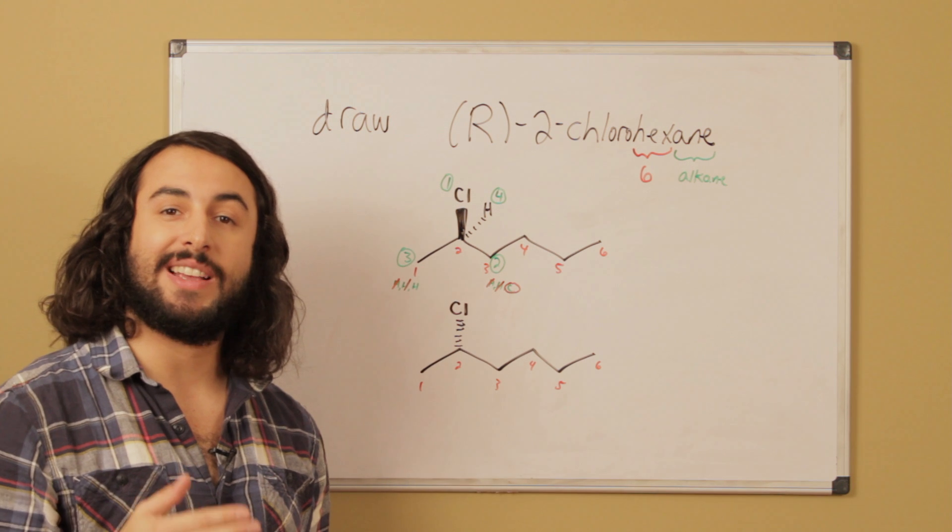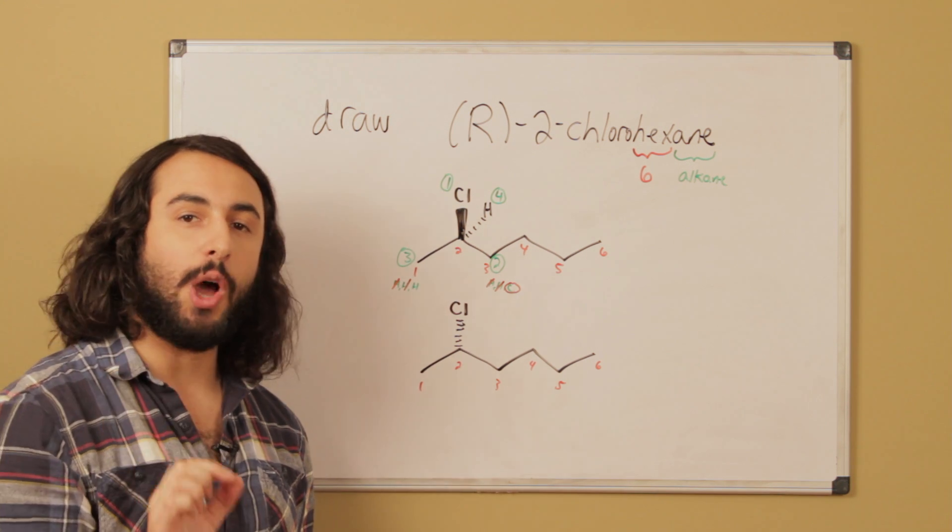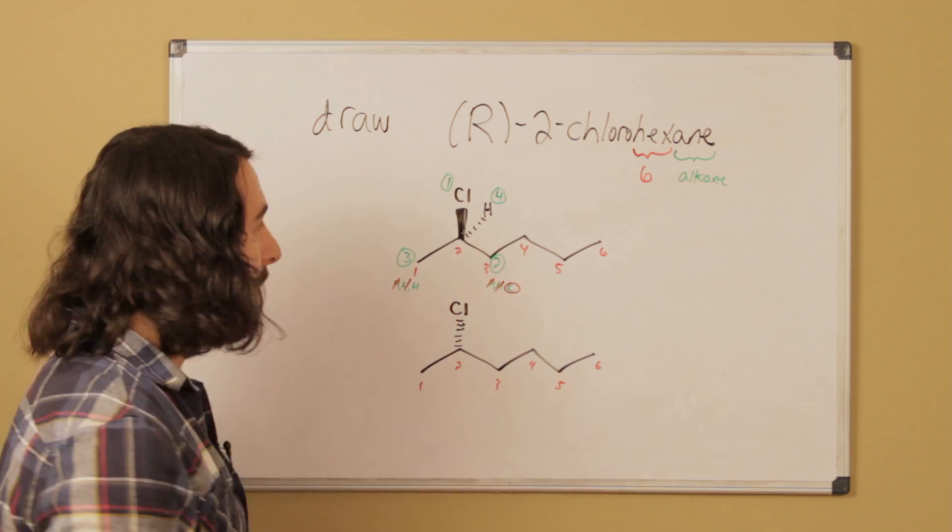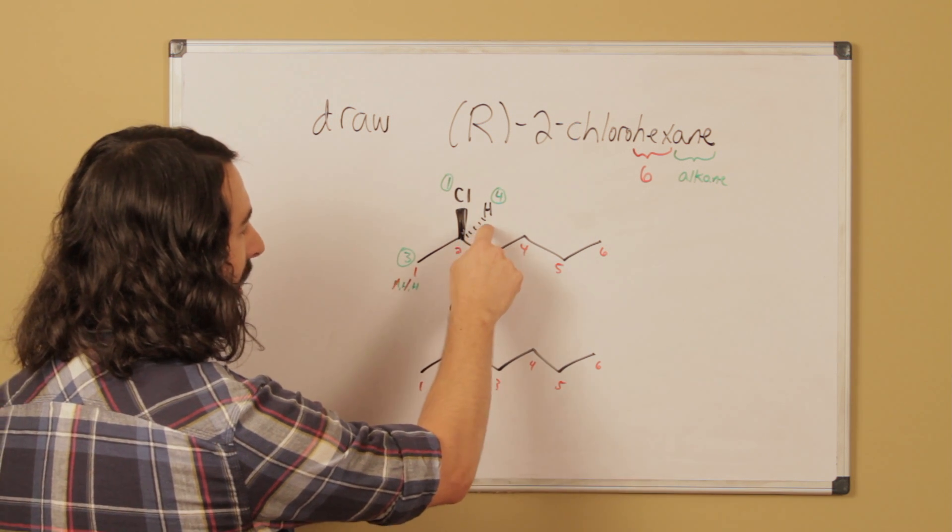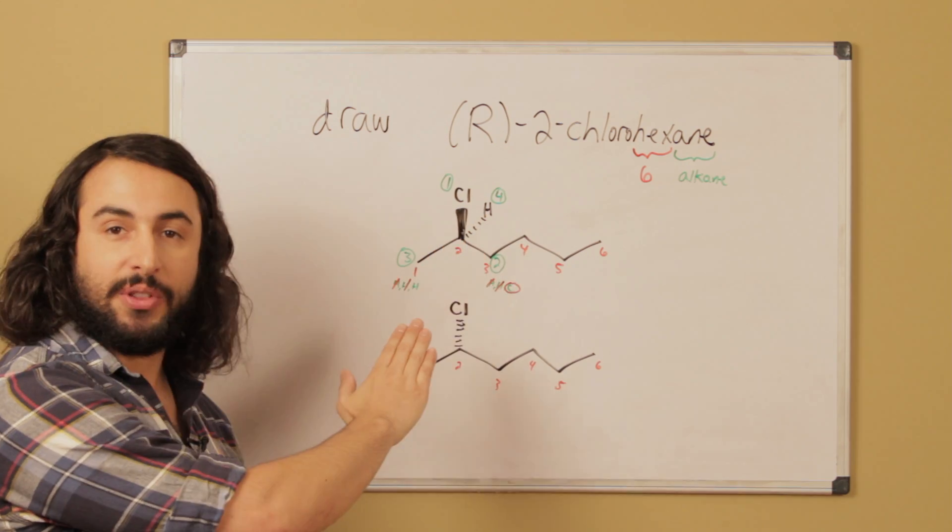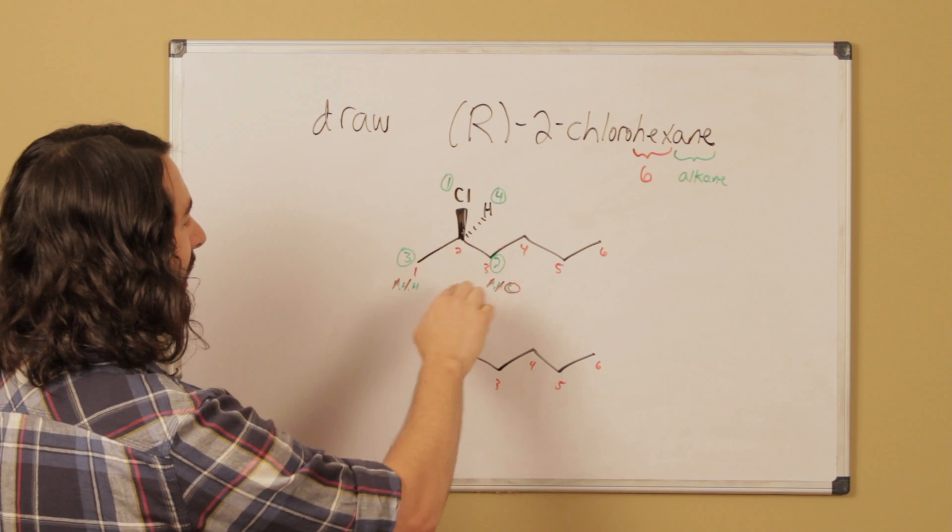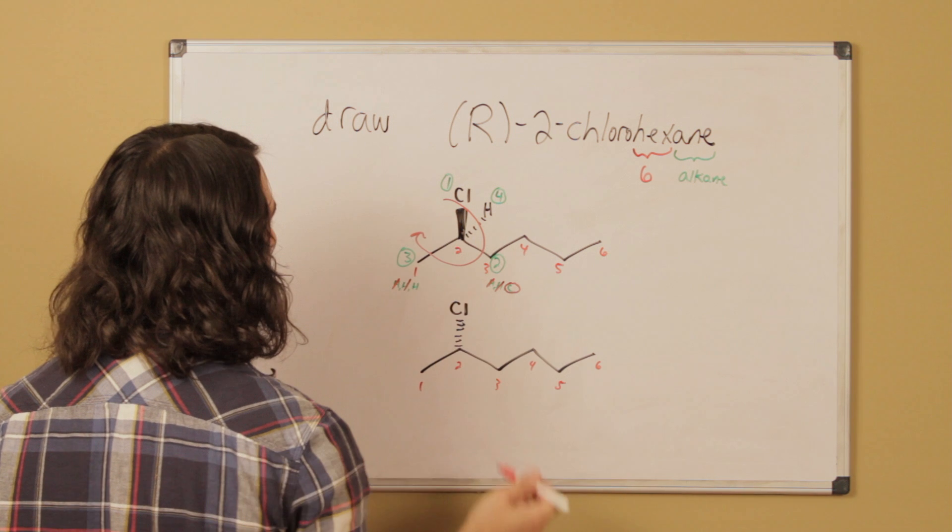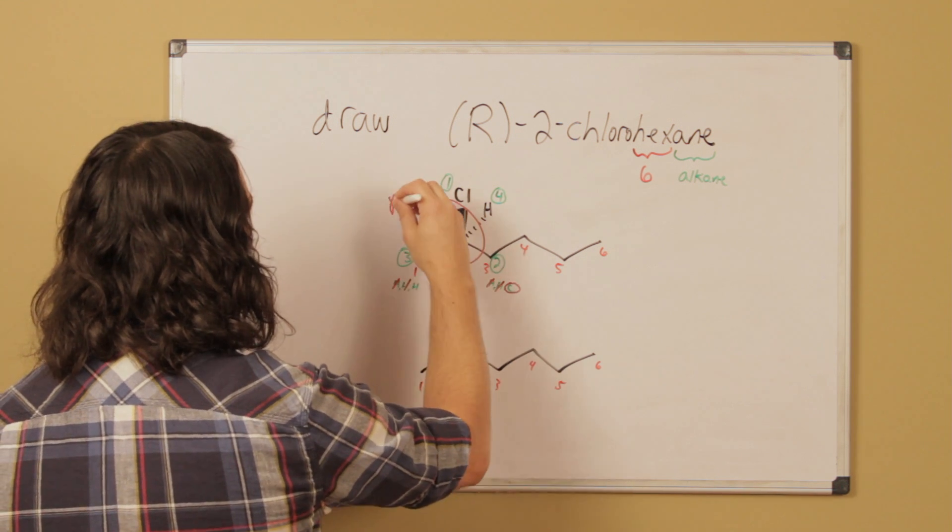Now, in order to assess R and S we have to have the lowest priority group away from us. Fortunately in this case, that is already happening because the dash bond hydrogen, which is going away from us past the board, is the furthest away from us. So we can simply assess from one to two to three. We see that from one to two to three we are going in clockwise fashion, so that is an R stereocenter.